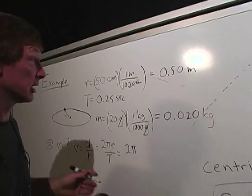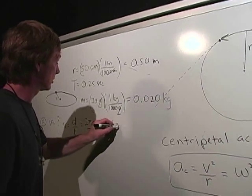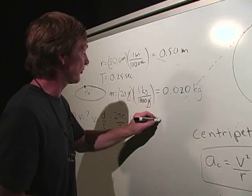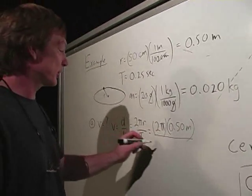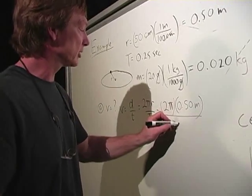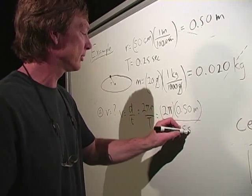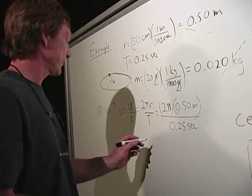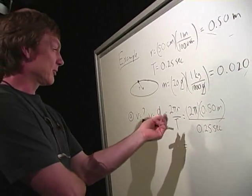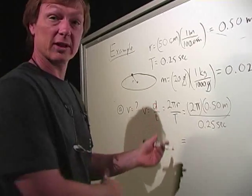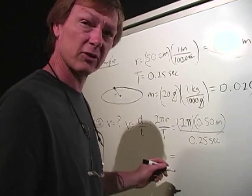So now I've got everything I need. 2 pi times 0.50 meters divided by the period, which is 0.25 seconds. 2 pi times, and that's going to give me, let's see, 12.6. I think that's going to give me 12.6 meters per second.